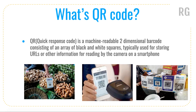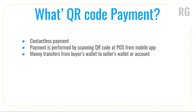A QR code is machine-readable and consists of an array of black and white squares, typically used for storing URLs or any other text information, where you can use a camera and scanner to read the information. You are seeing a lot of pictures about QR codes — they are used in a lot of stores at POS terminals for payment transactions.